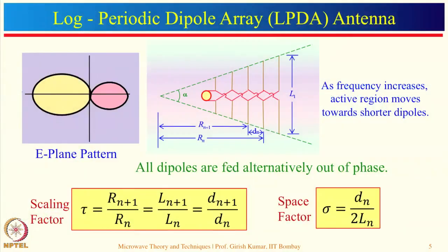Now let's talk about the log periodic dipole array antenna. Its purpose is different from the Yagi-Uda antenna. In Yagi-Uda, we try to increase directivity but bandwidth is relatively limited. In log periodic, more emphasis is given on bandwidth. Here all the dimensions of the dipole antenna vary logarithmically.